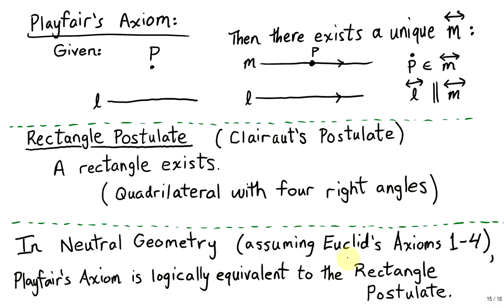We will assume Euclid's axioms 1 through 4 and show that, if you assume Playfair's axiom, you could construct a rectangle. And, conversely, perhaps surprisingly, if you assume that a single rectangle exists, this is in fact enough to prove Playfair's axiom.